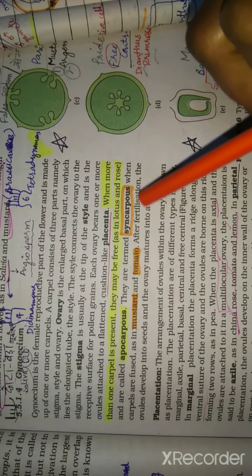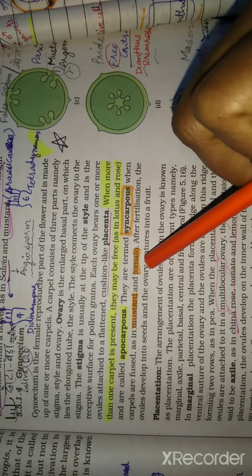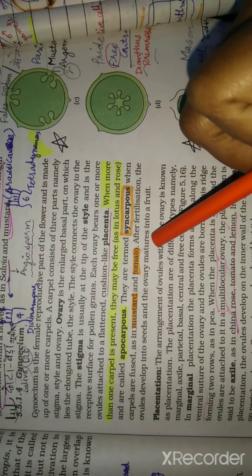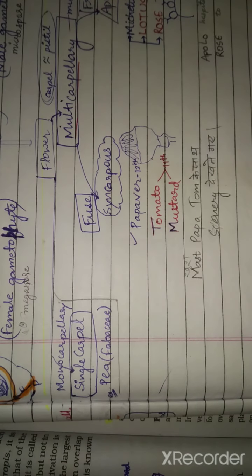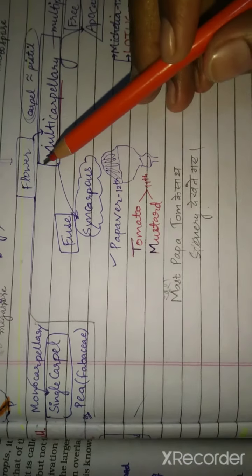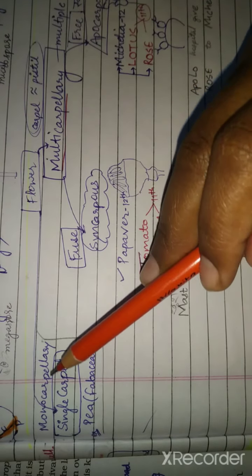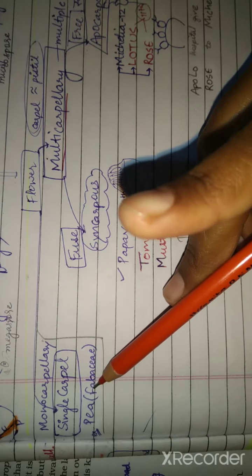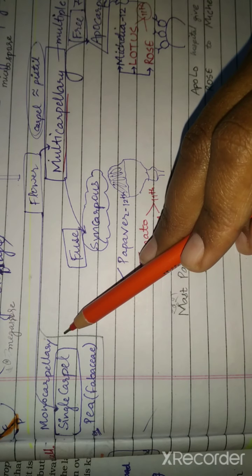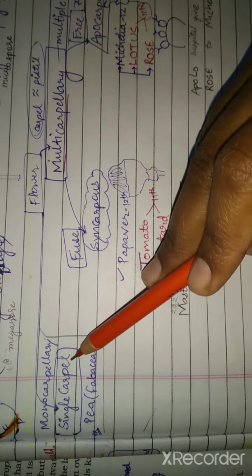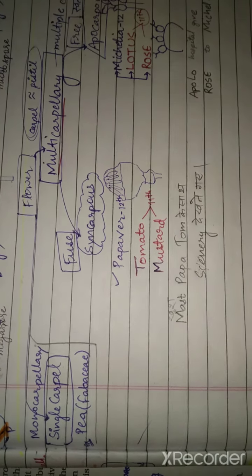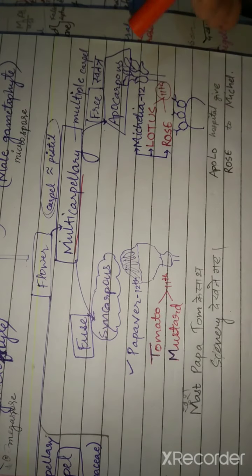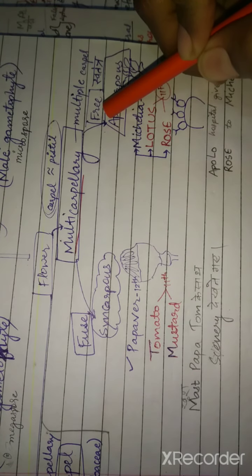Now I have made a table with 11th and 12th content. In a flower, there are two conditions. Monocarpellary condition has a single carpel, for example pea from Fabaceae family. Multicarpellary has two conditions: fused and free carpels.